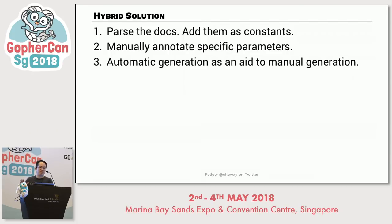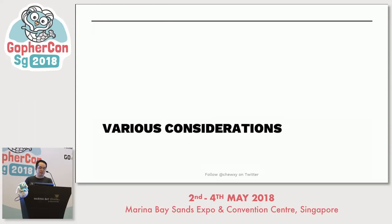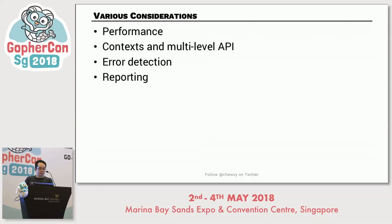Essentially, you generate 80% of the library and then manually fix up the remaining 20%. Along the way there are other considerations — it's more of a mixture of tips and things to think about — and we'll walk through them point by point, starting with performance.